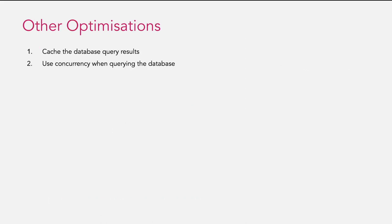Another optimization we can do: first, use caching for our database query results. Second, use concurrency when querying the database. In our case, since we are using Golang, we use goroutines to do the check per campaign, send the result to our channel, wait for all goroutines to finish, and then send the list of campaigns to the frontend app.